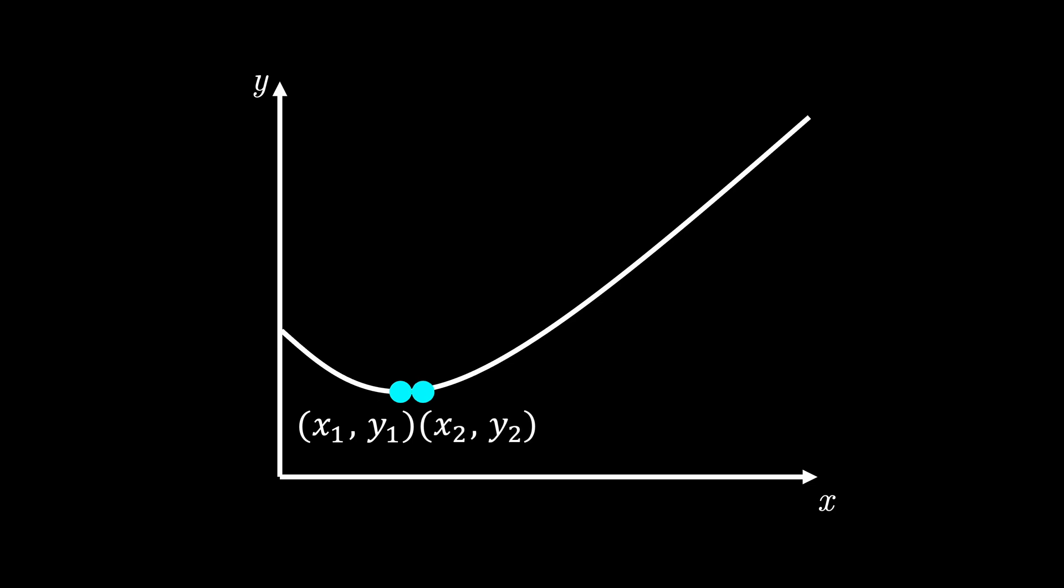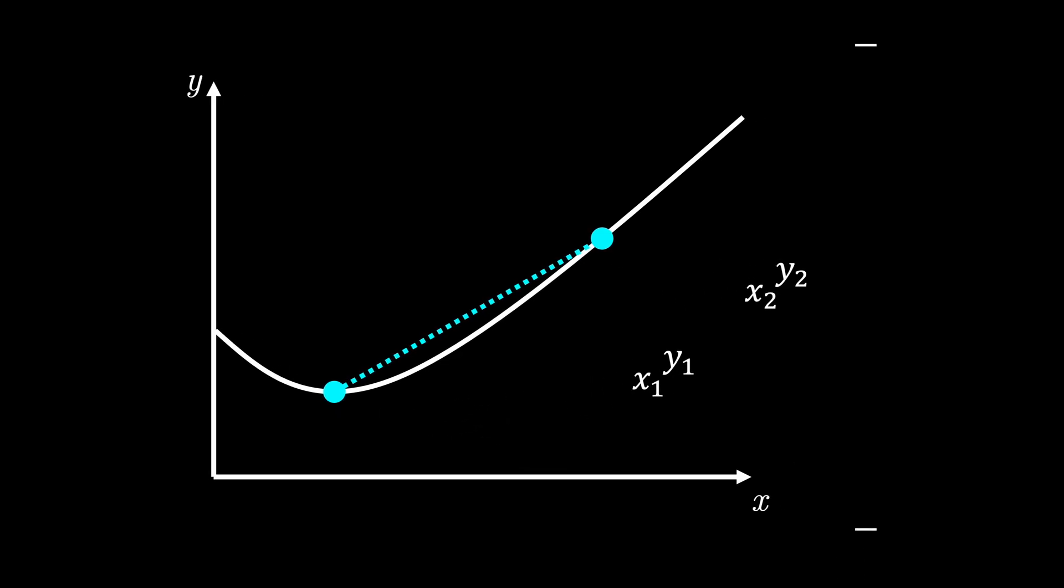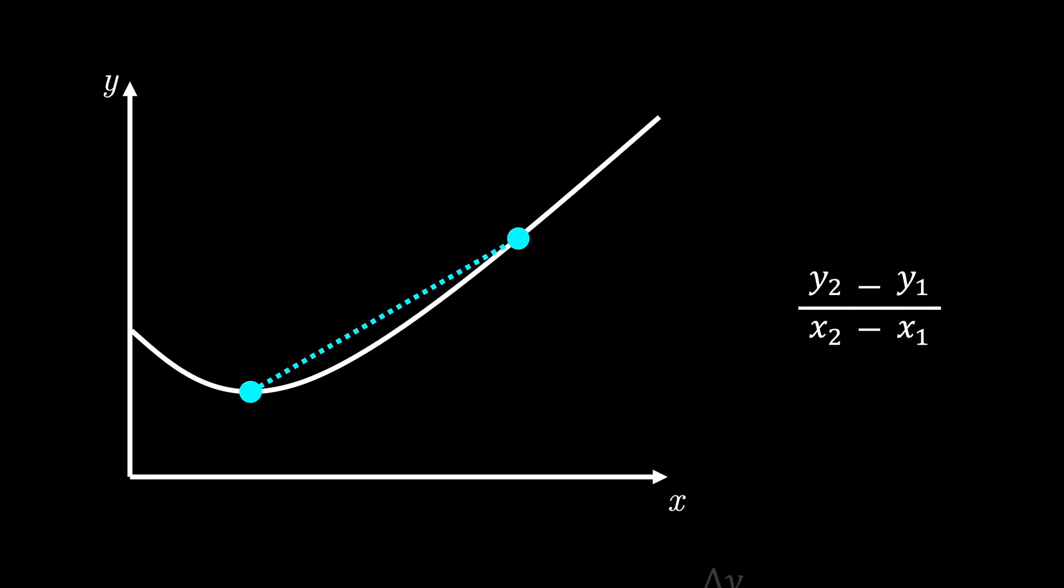To do this, let's remind ourselves of the gradient formula. The change in y divided by the change in x. Now we'll rewrite this formula slightly differently. We'll call the first coordinate x and f of x, and the second coordinate x plus h and f of x plus h. Substituting these into the gradient formula gives f of x plus h minus f of x, all divided by h.